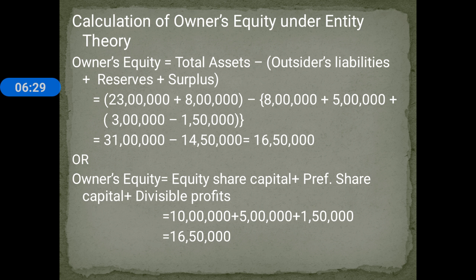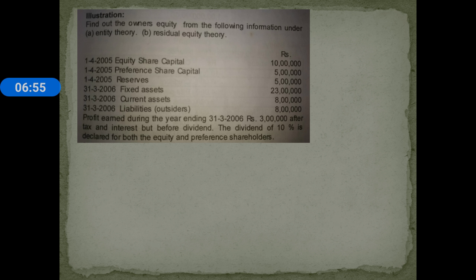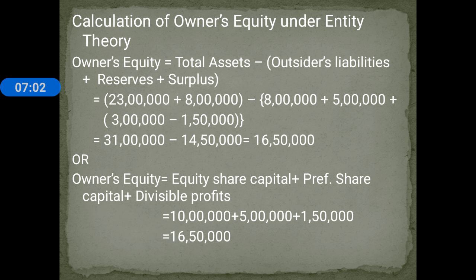Calculation of owners' equity under entity theory. The formula is: Owners' Equity = Total Assets minus (Outsiders' Liabilities + Reserves + Surplus). Total assets = Fixed assets + Current assets = ₹23 lakh + ₹8 lakh = ₹31 lakh, minus outsider liabilities ₹8 lakh, reserves ₹5 lakh, plus surplus.